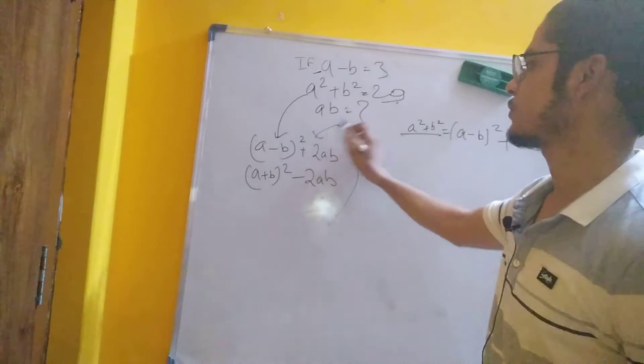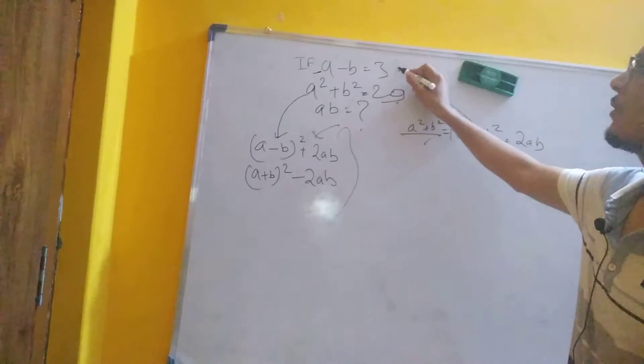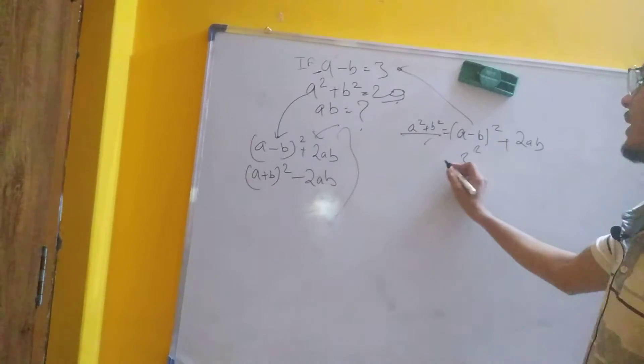First of all, we can write a minus b squared equals a squared plus b squared minus 2ab. The value of a minus b is 3, so 3 squared. A squared plus b squared value is 29.